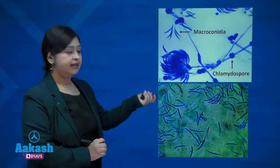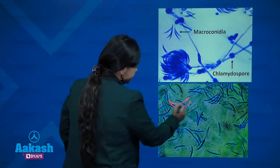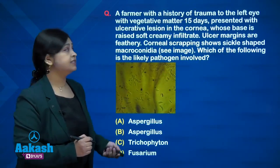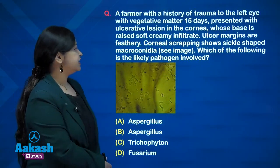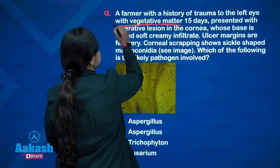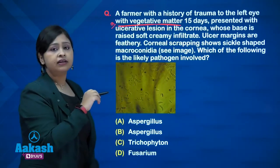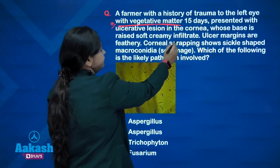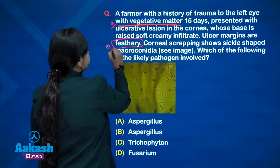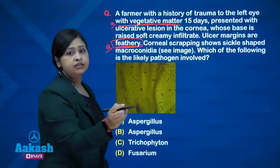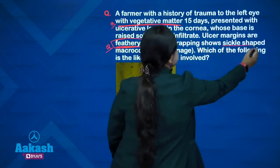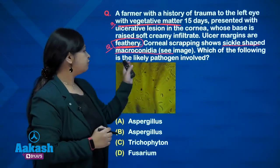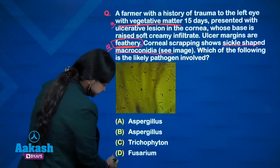This image can appear in the exam — you can see the sickle-shaped macroconidia, indicating fusariosis. A question from the exam: a farmer with trauma to the left eye with vegetative matter presented with ulcerative corneal lesion with creamy infiltrate at the base and feathery ulcer margins. Corneal scraping shows sickle-shaped macroconidia. Whenever there is trauma with vegetative matter, think fungal keratitis. The likely pathogen is Fusarium.